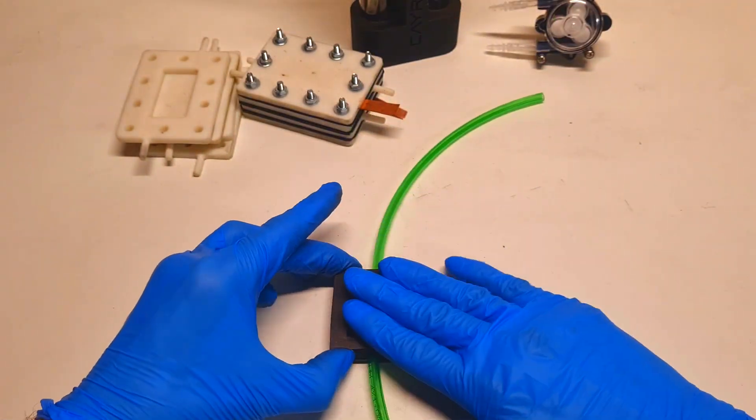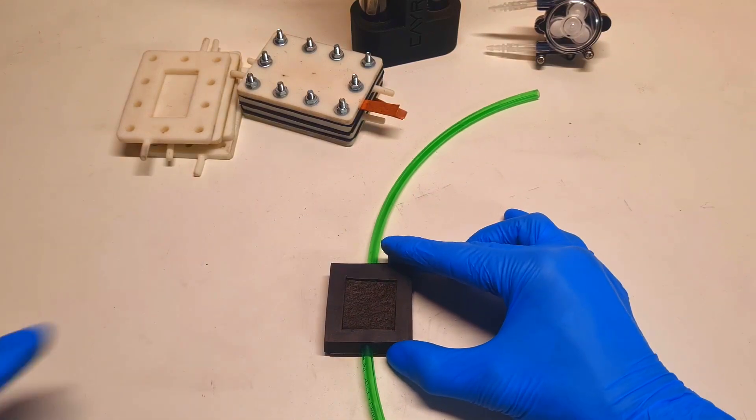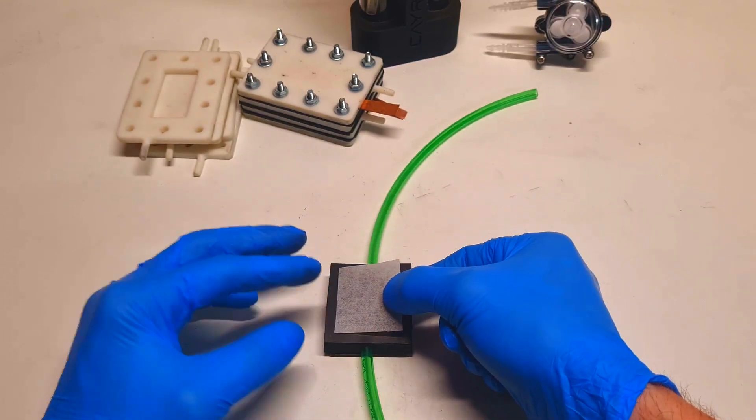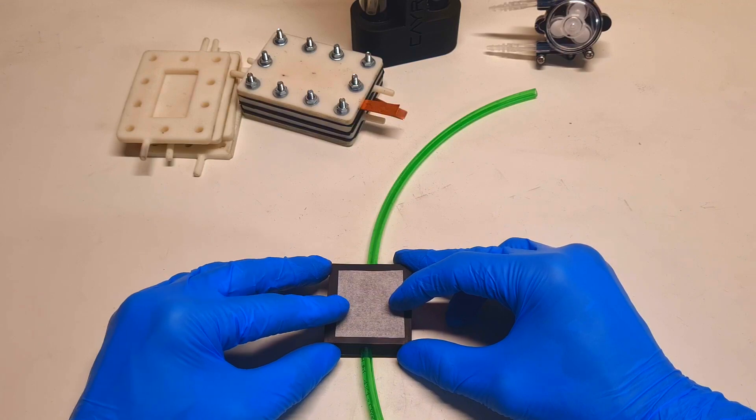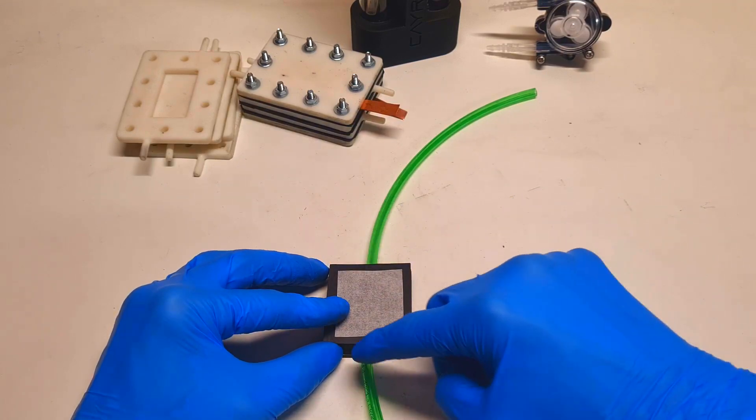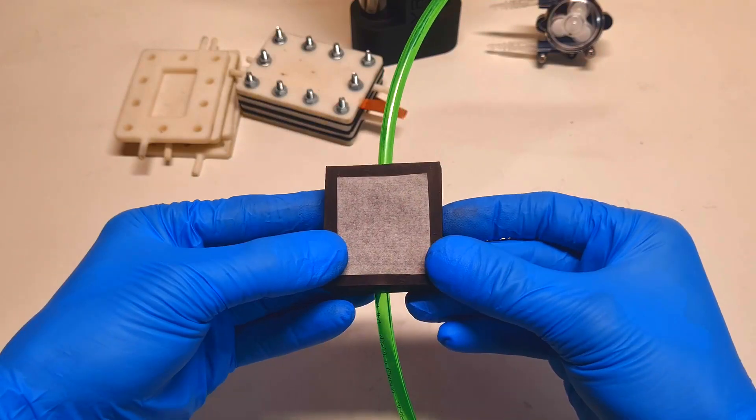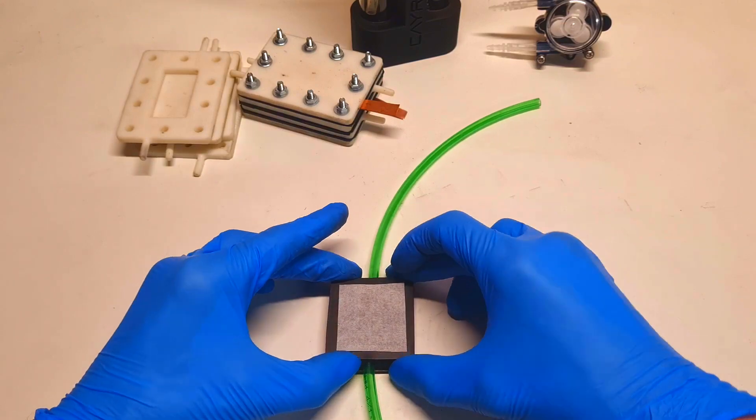Like so. Now on the top you will put your membrane or separator. But make sure that the membrane, I mean the size of the membrane, is a little bit smaller than the entire housing of the cell. Like so.